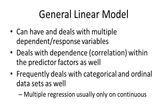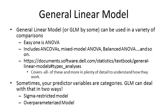So what is the general linear model? It's a linear model that allows multiple response variables and multiple dependent variables, both in predictors and responses. It handles dependence or correlation from predictors well, and it frequently deals with categorical or ordinal data sets — things like male/female or ratings on a scale from 1 to 10, which multiple regression doesn't handle well. The GLM can be used in a variety of analyses including ANOVA, ANCOVA, mixed model ANOVA, and balanced ANOVA, some of which will be covered in the next lecture.